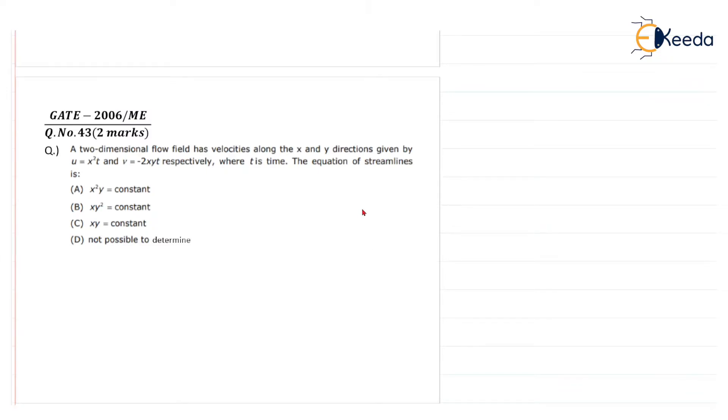Let's start. As per the given question, in GATE 2006 Mechanical Engineering, question 43, 2 marks: a two-dimensional flow field has velocities along the x and y directions given by u equals x squared t and v equals minus 2xy t respectively, where t is time.